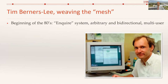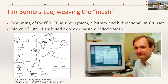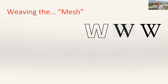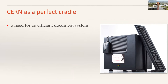Tim Berners-Lee proposed in the 1990s a first system at CERN called Enquire — a system to arbitrarily and bidirectionally link documents together, also supporting multi-users. Then in March 1989, he proposed a distributed hypertext system that he called the MESH, in a document called Information Management: A Proposal. CERN was a perfect cradle for that MESH: it had a need for an efficient document system to allow different scientists to exchange their results, data, and how to use the different pieces of equipment.